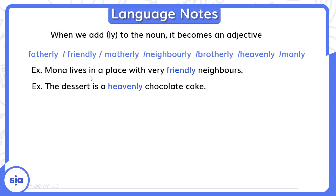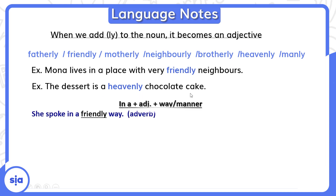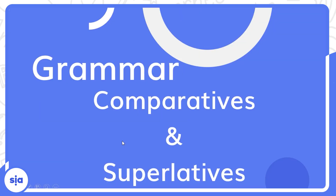Let's see some examples. Muna lives in a place with very friendly neighbors — الجيران بتوعها لطاف، بيتعاملوا بشكل ودي. The dessert is a heavenly chocolate cake — كأنها من الجنة. Now, if we say 'in a friendly way' — دي بتبقى adverb لأنها بتوصف الفعل. She spoke in a friendly way — بتوصف spoke. لما بوصف الاسم بيبقى adjective، لكن لما بوصف الفعل بيبقى adverb.